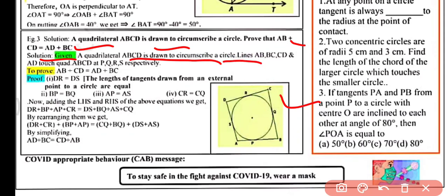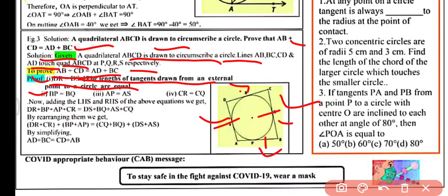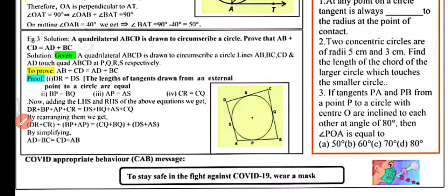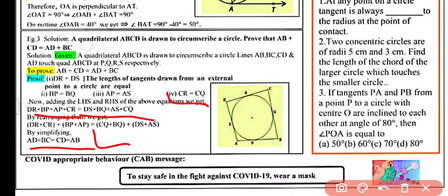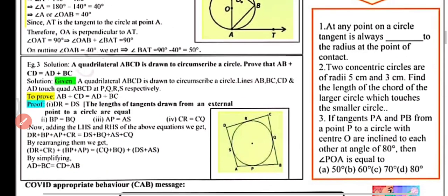The circle touches the sides at points P, Q, R, and S respectively. Since tangents from an external point are equal: DR = DS, CR = CQ, BP = BQ, and AP = AS. Adding all these relations: (DR + CR + BP + AP) = (DS + CQ + BQ + AS), which gives AB + CD = BC + AD. This is the required result.